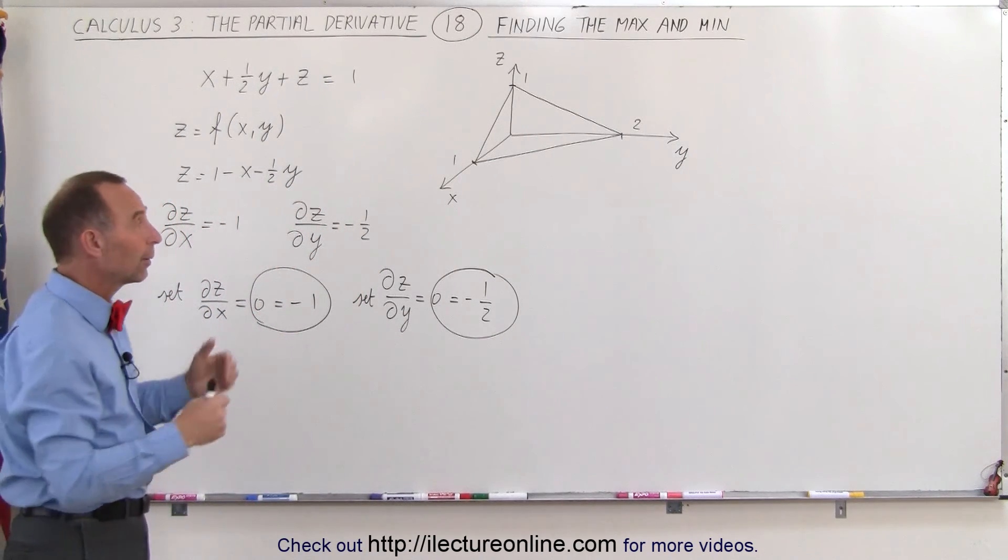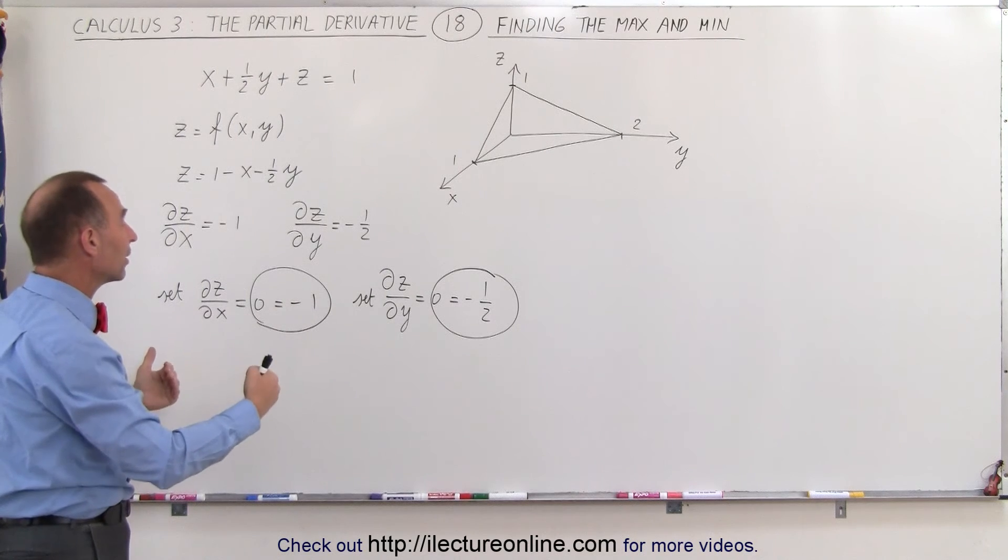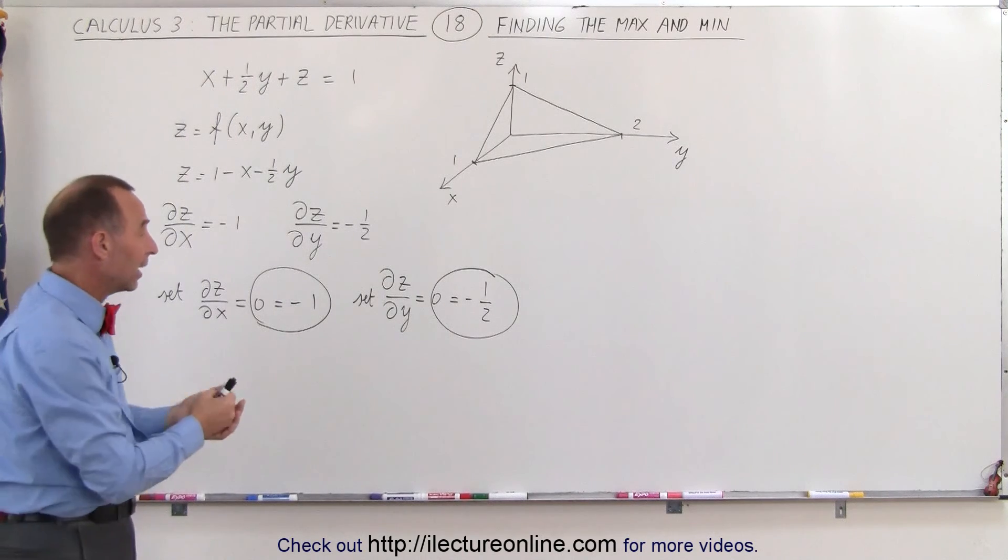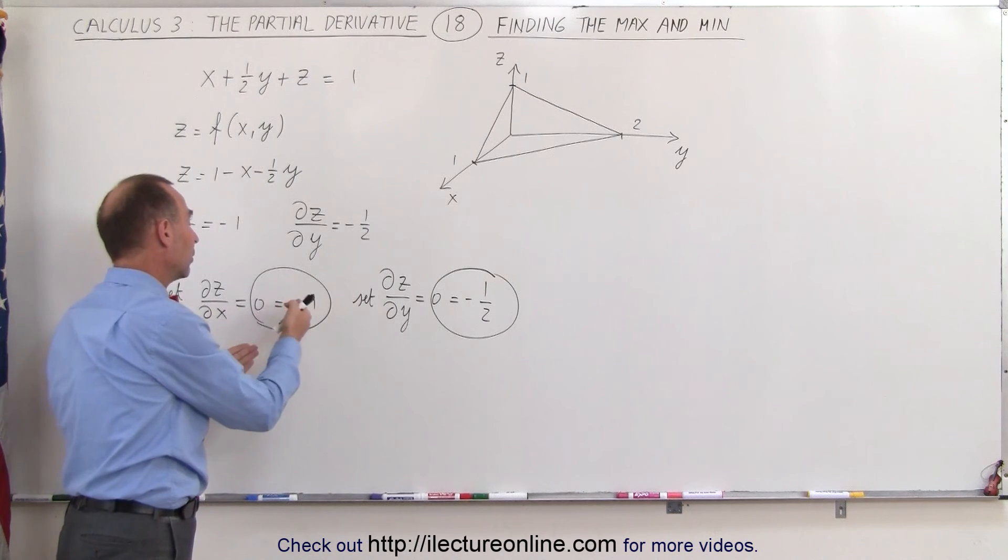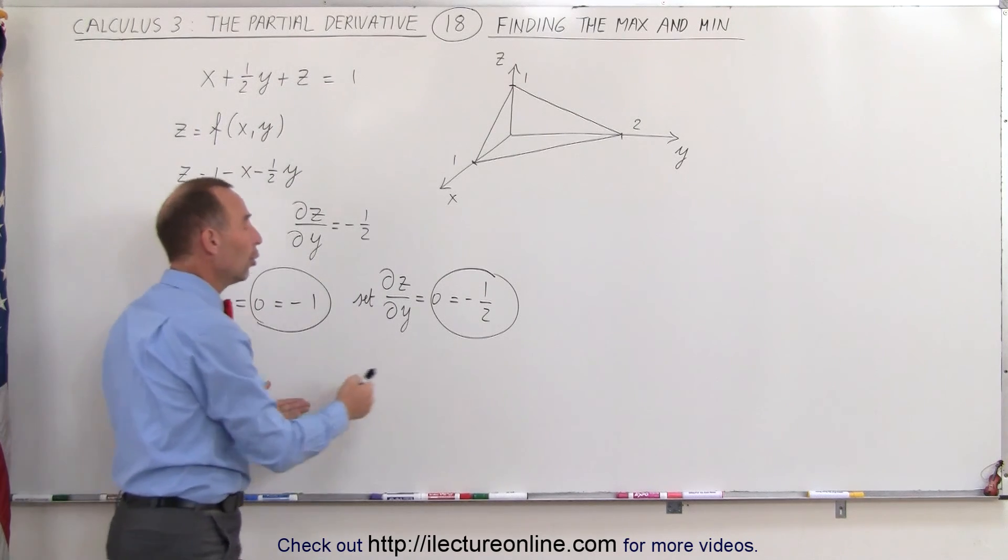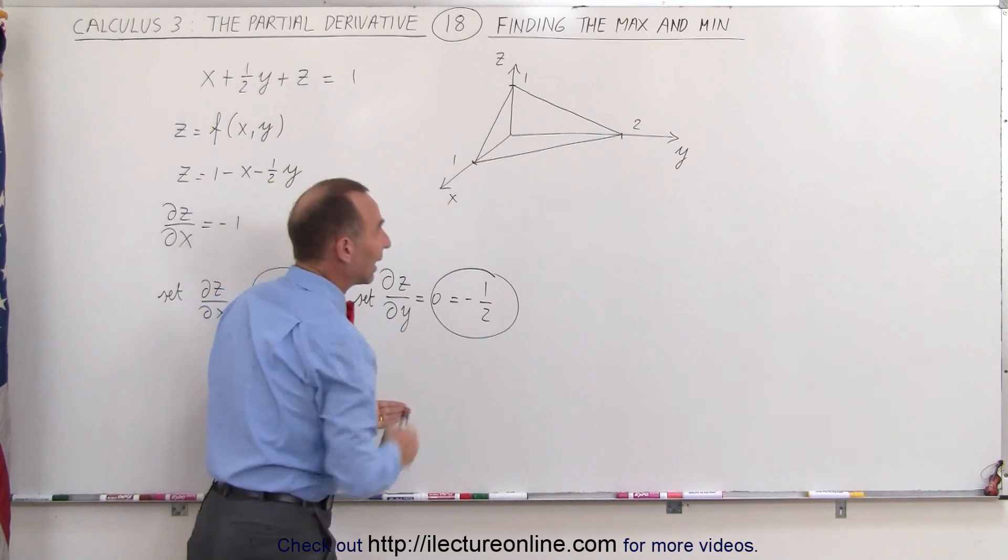In other words, there's no place where we can say there's a maximum or minimum value, because there's no value for x or no value for y where 0 can ever equal negative 1, or where 0 can ever equal negative one-half.